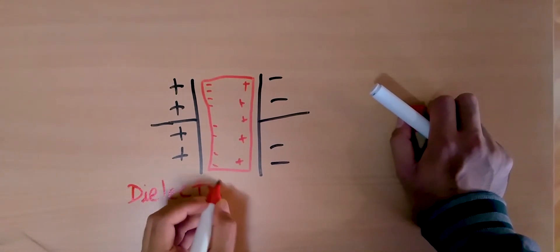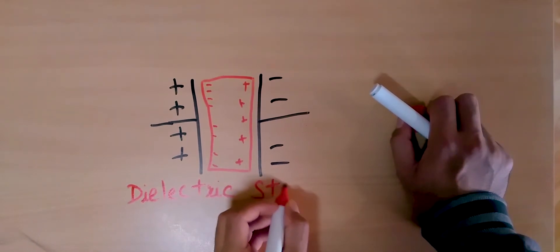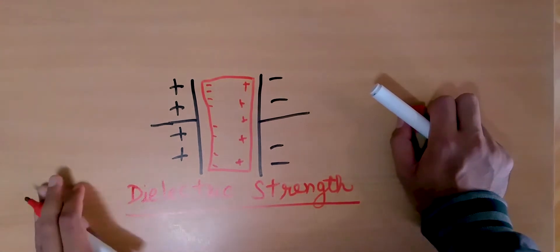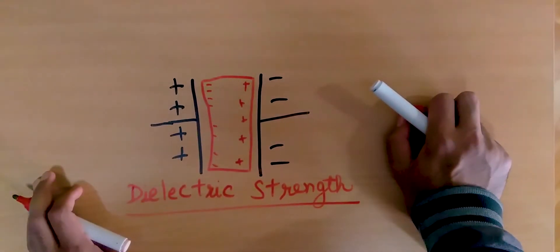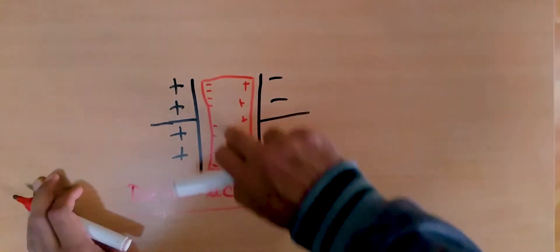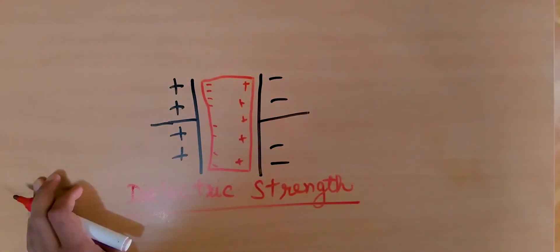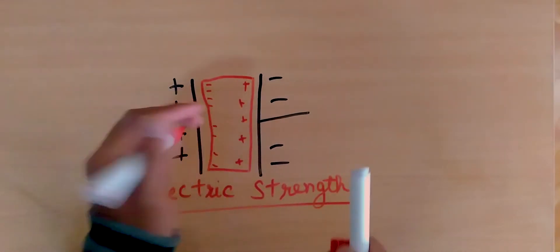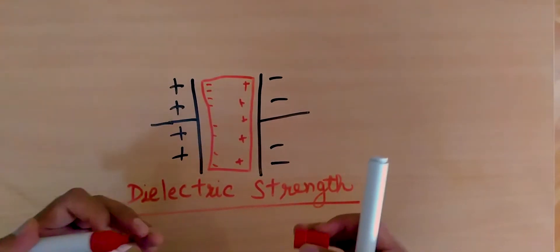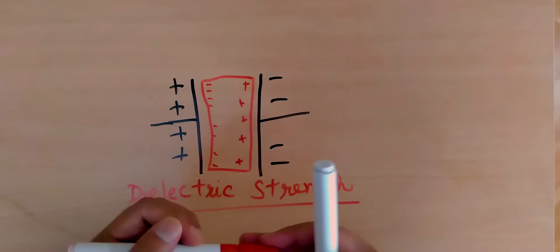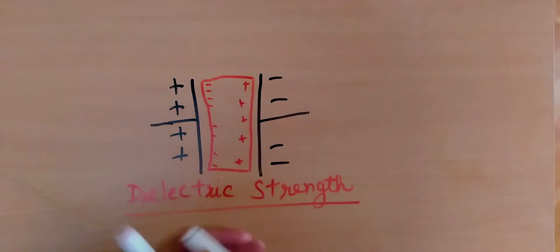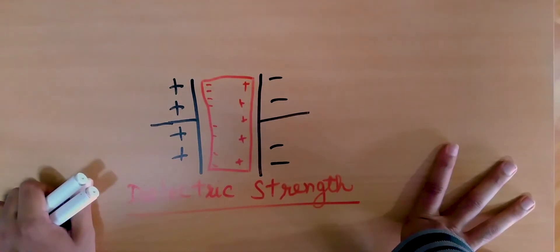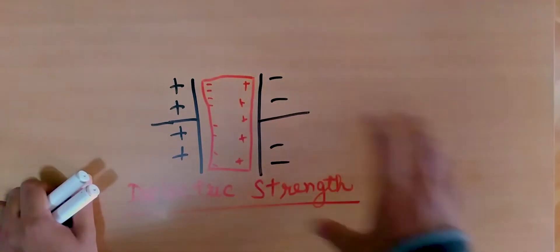The voltage at which the dielectric will begin to conduct is called dielectric strength. It is the voltage at which the insulator or dielectric begins to conduct, and it tells you the strength that the dielectric has to stop current from flowing. Once you exceed this dielectric strength, the dielectric can no longer stop the current and will allow it to flow.